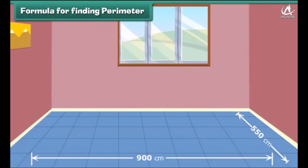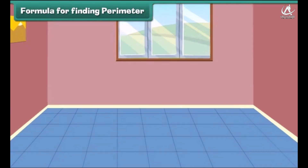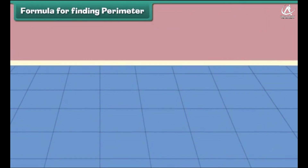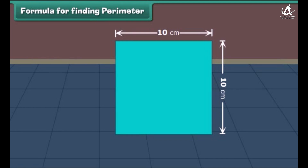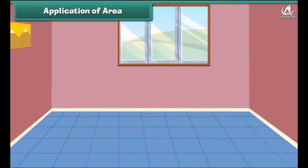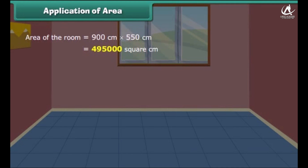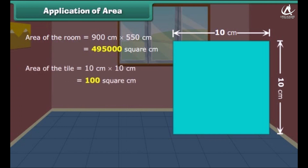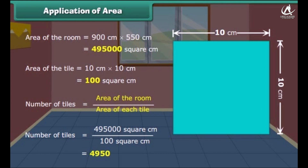This is a room of length 900 centimeters and width 550 centimeters. Rohan wants to change the tiles of the floor. If each side of the new tile is 10 centimeters, how many tiles will be needed? The area of the room is equal to the length multiplied by the width, which is equal to 4,95,000 square centimeters. The area of the tile is equal to 10 multiplied by 10, which is equal to 100 square centimeters. The number of tiles needed is found by dividing the area of the room by the area of each tile, giving us 4,950 tiles.